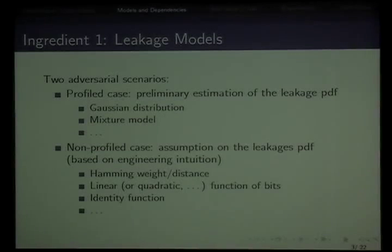The two main ingredients are the models—how the value being computed impacts the medium—and the dependency test between observations and predictions. For the leakage model, you have two adversarial scenarios. First is the profiled case where the adversary can, before the actual attack, control the device and feed it various plaintexts and keys to perform a preliminary estimation of the density of the leakages using Gaussian distributions, mixture models, and such. The other case is non-profiled where the adversary has a device with a fixed secret key and must perform an assumption on the distribution of leakages, usually based on intuition. A typical example is the Hamming weight, but there are more advanced hypotheses depending on the technology.